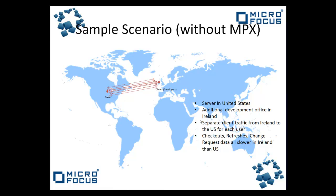This scenario illustrates this definition in practice. In the scenario pictured, the main development office where the server is situated is based in the United States. A development office also exists in Ireland comprising some 30 developers. Without MPX available, client-server traffic is carried from Ireland to the US and vice versa for each developer separately. This long-distance communication is borne out in file checkouts, builds, data refreshes, and change request use. The primary result is a distinctly sub-optimal usage experience for the developers based in Ireland, compared to quick and efficient response times in the US office.